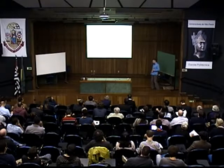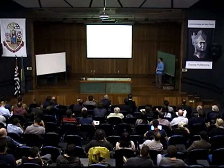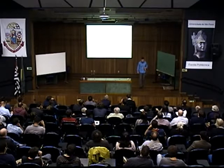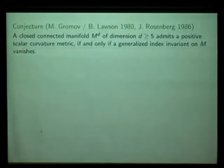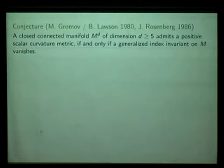I state it in a slightly vague way: a closed connected manifold of dimension at least five admits a positive scalar curvature metric if and only if a generalized index invariant on M vanishes. In the spin case this index invariant is the A-hat genus, or more generally the Rosenberg index living in K-theory connected to a C*-algebra of the fundamental group of M. In the non-spin case this generalized index invariant is supposed to vanish. So we have one simple criterion, conjecturally, that allows us to decide if a given manifold admits a positive scalar curvature metric or not.